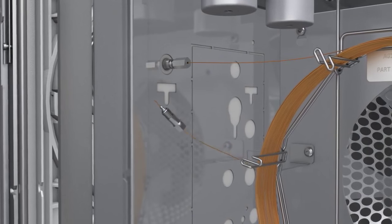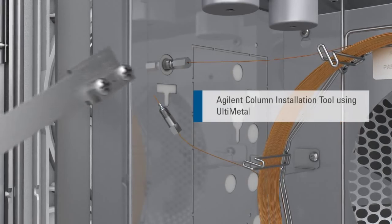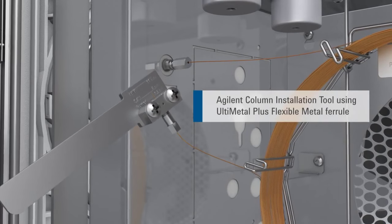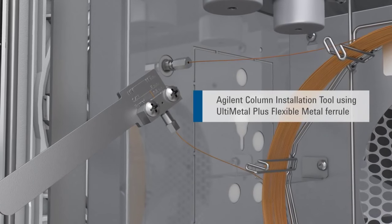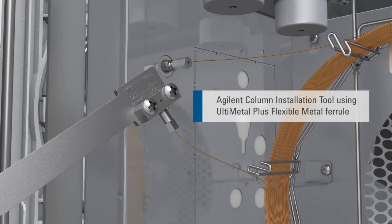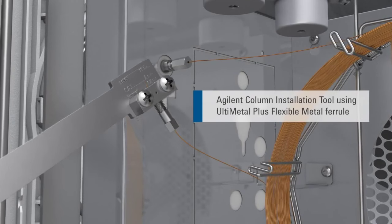To pre-swage the flexible metal ferrule onto the column, use the column installation tool to measure the required length. Tightening the column nut permanently fixes the flexible metal ferrule onto the column tubing.